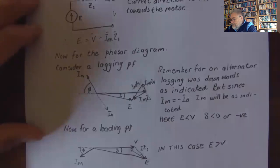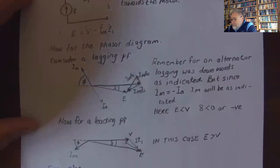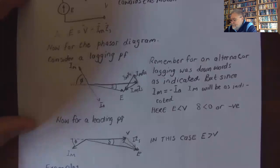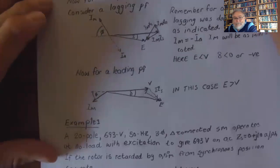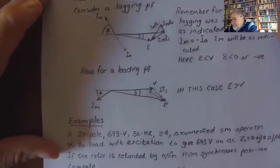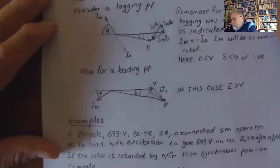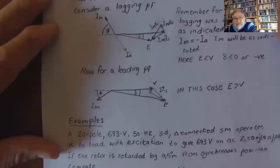E is less than V and delta is negative for the lagging power factor case. If you look at the leading power factor, you can see that I_m is now downwards and therefore I_m R and I_m X_s are drawn accordingly. In this case, E is bigger than V.